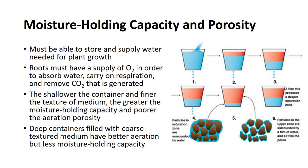Growing plants require large quantities of water to replace that lost by transpiration and used for metabolic purposes. One of the important functions of a good container medium is to store and supply the water needed for plant growth. Roots must have a supply of oxygen in order to absorb water; therefore, the medium must have good aeration. Roots must have good aeration to carry on respiration and allow for the removal of carbon dioxide (CO₂) that is generated in the process.